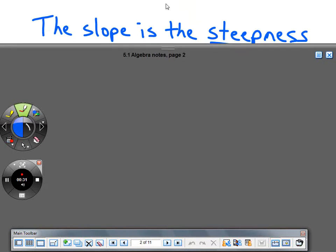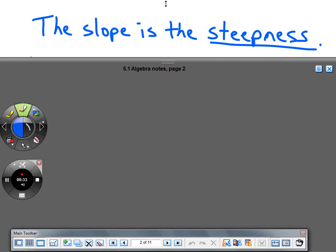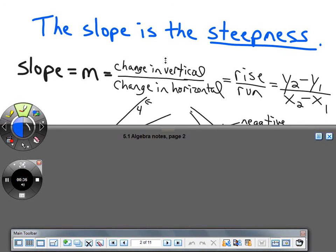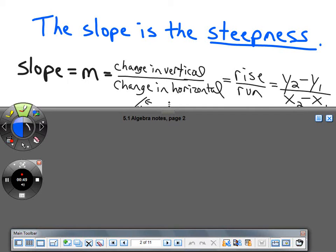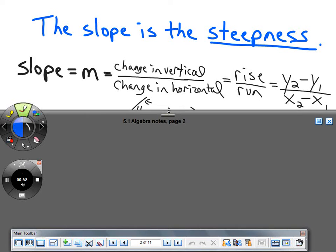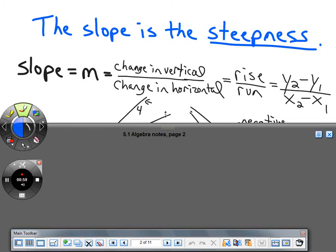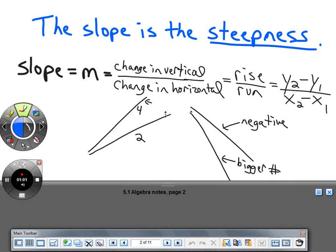Slope is defined as steepness. It's represented by M, and it's the change in vertical over the change in horizontal. It's also the rise over run. When you calculate it from two points, you always subtract the Y's on top over the X's.